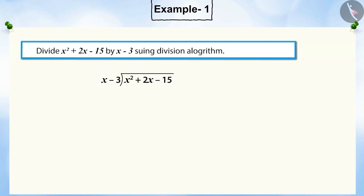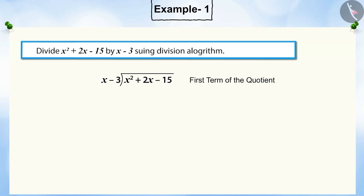In this question, x squared plus 2x minus 15 is the dividend and x minus 3 is the divisor. In the previous video, we saw that to get the first term of the quotient, we divide the term with the highest power of the dividend, i.e., x squared,